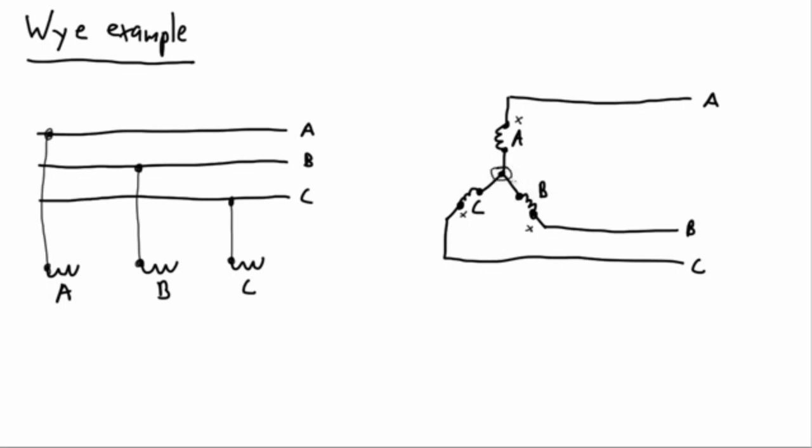Now our only other point of connection is this middle point right here. What exactly are we going to do here? One of the great strengths of the Y connection is the simplicity with which it can employ a neutral conductor. And that's what we're going to see. We're going to see now the neutral come into play.